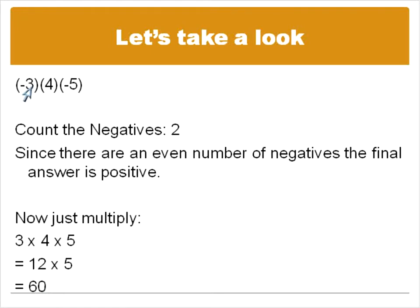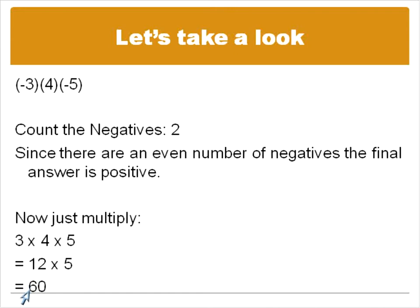You don't have to worry about working out what negative three times positive four is — that would be negative twelve — and then what negative twelve times negative five is. You don't have to worry about that. Just count the negatives, you know your final answer, multiply them like they're all positive, and then apply the sign at the end.